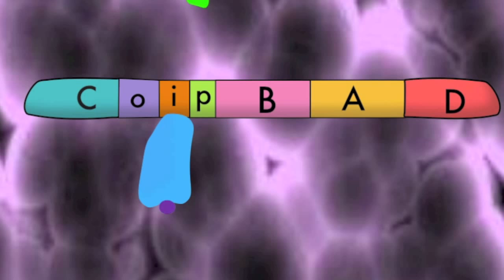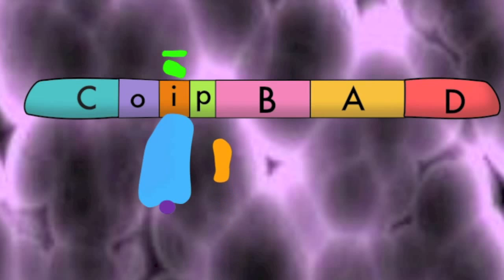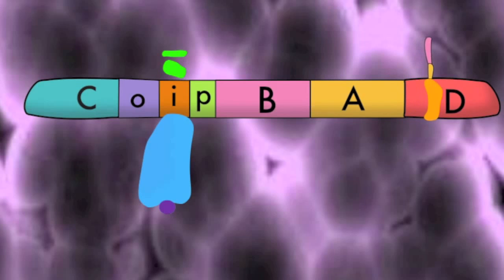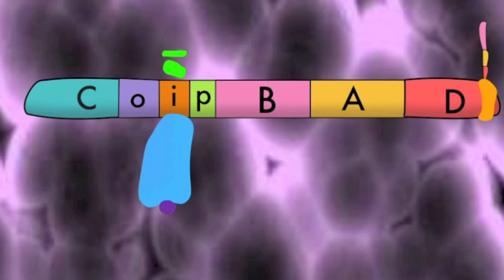The same cAMP-CAP complex that operates in the lac operon must also bind to the ARAI site. In this configuration, RNA polymerase has an affinity for the operon and begins transcription. When transcription is finished, the mRNA strand that codes for enzymes to break down arabinose is made. The mRNA is translated into three enzymes that together break down arabinose for energy for the cell.